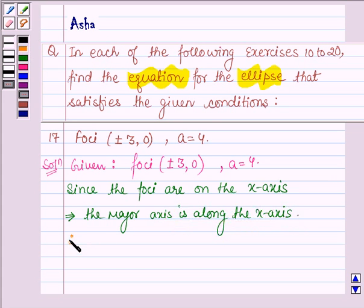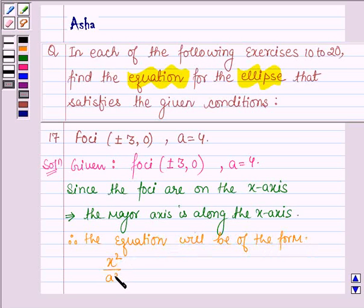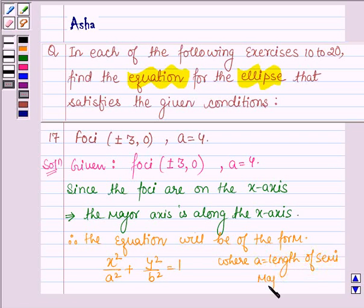Therefore the equation will be of the form x²/a² + y²/b² = 1, where a is the length of semi-major axis and b is the length of semi-minor axis.